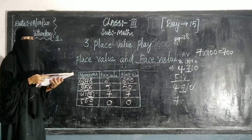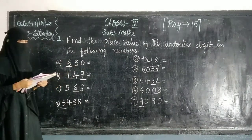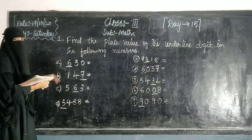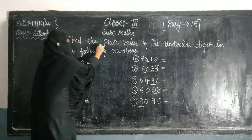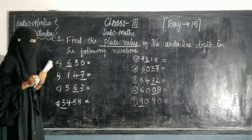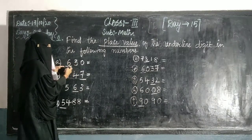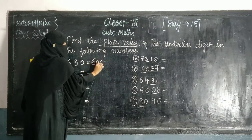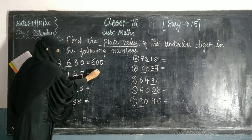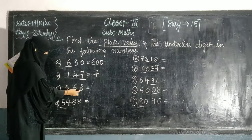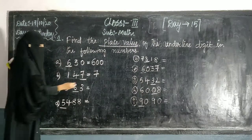Now take out page number 29. Question number 1: find the place value of the underlined digit in the following number. The place value is according to the position. You can see that 1 stands for 100. So what is the place value of 6? 6 into 100. Next, what is the place value of 7? It's in the 1s, so write 7. Next, 1 stands in the 10s — the place value of 6 is 6 into 10, that is 60.